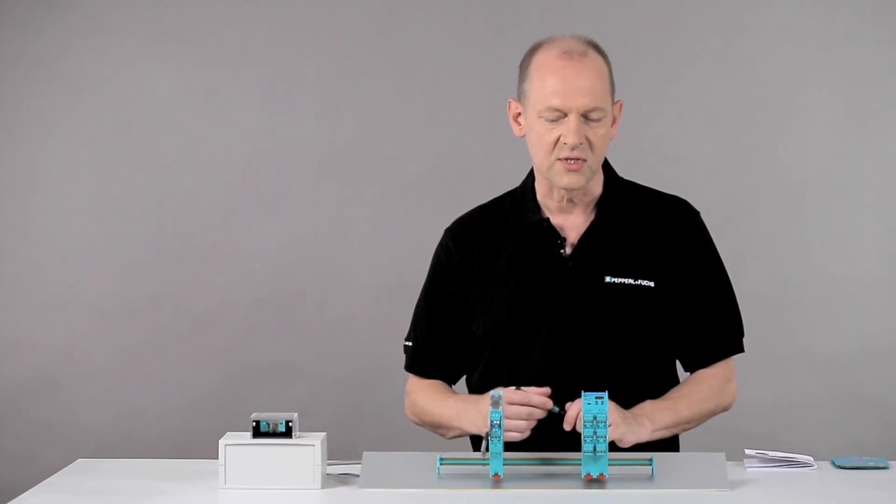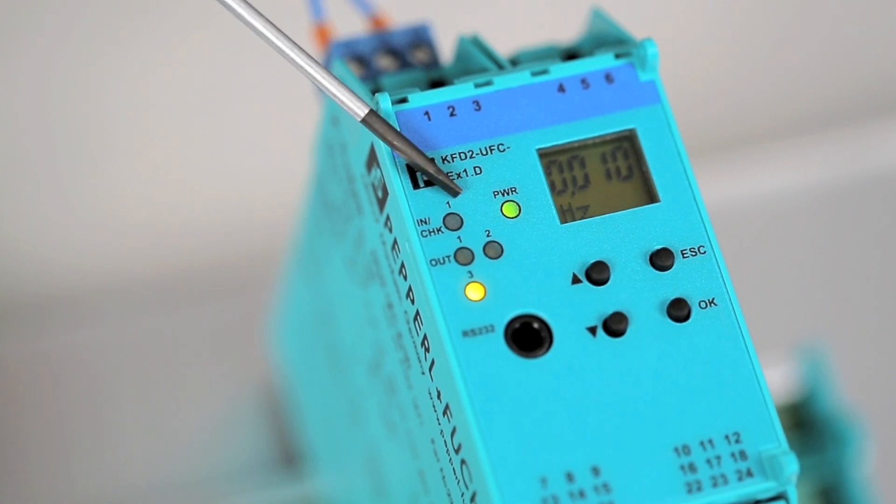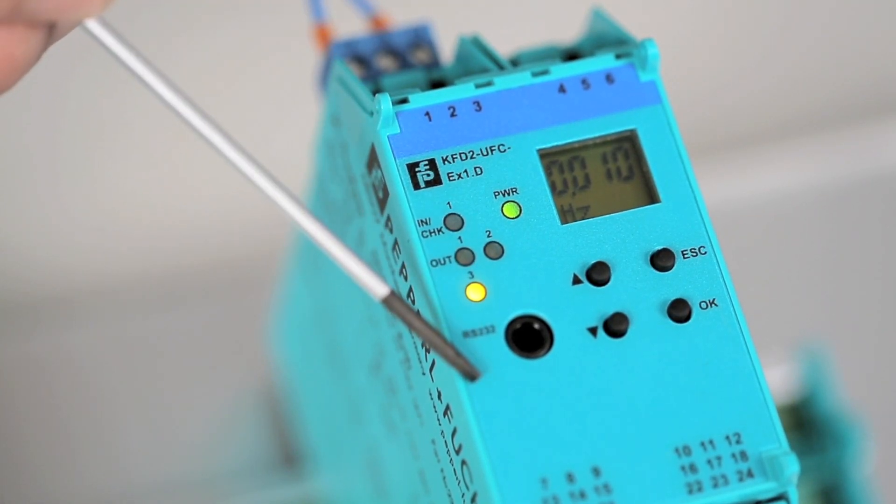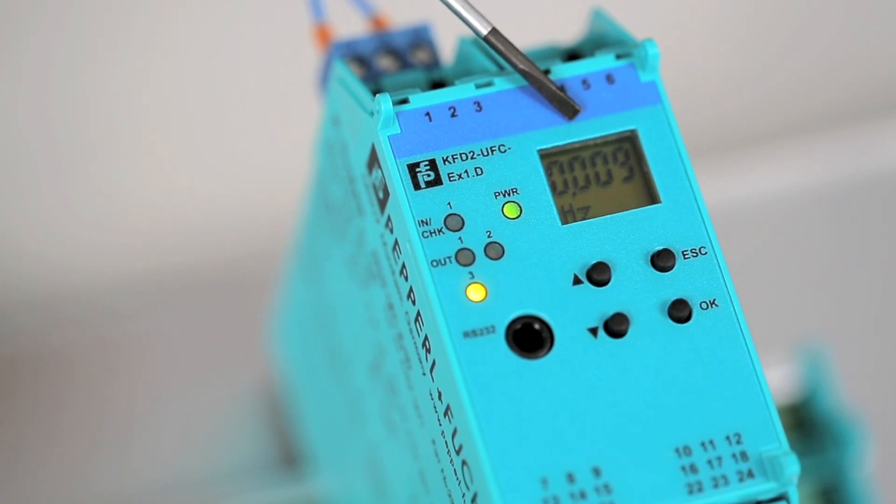On the front side, there are five status displays. Below is an RS-232 interface. Moreover, there is a display to show measurement values, null functions and also the settings in the parameterization mode.